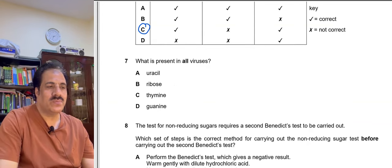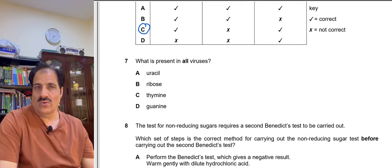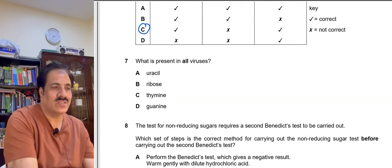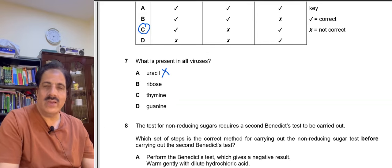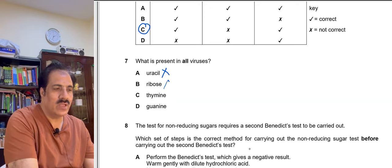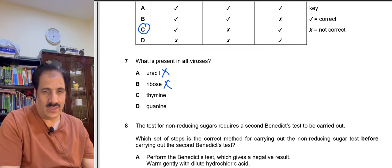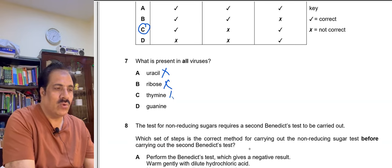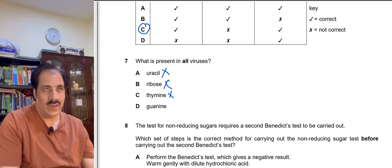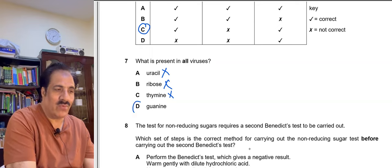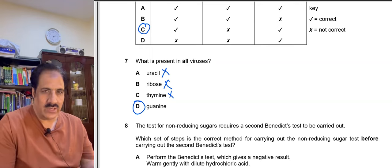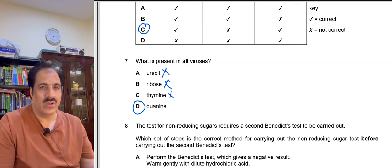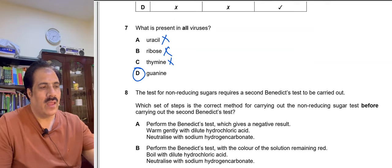Question 7: What is present in all viruses? Not all viruses contain uracil — some have DNA. Not all viruses contain ribose — those without RNA do not. Not all viruses contain thymine — some have RNA as genetic material. However, all viruses contain guanine, because both DNA and RNA contain guanine. So guanine is present in all viruses.